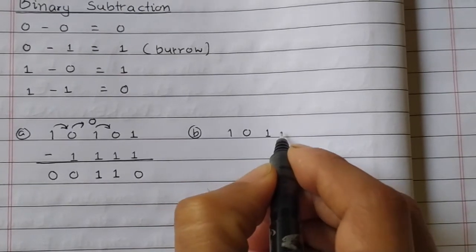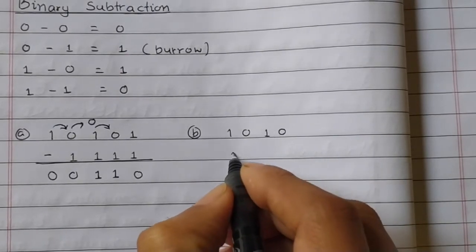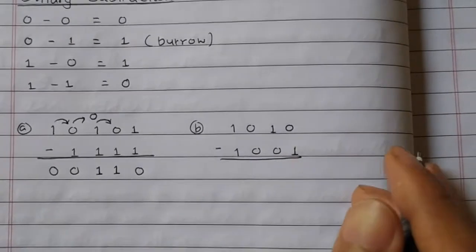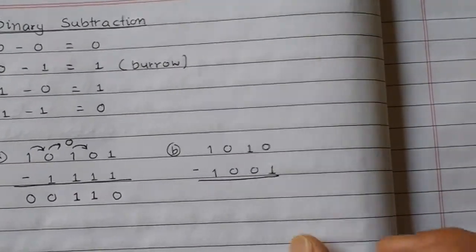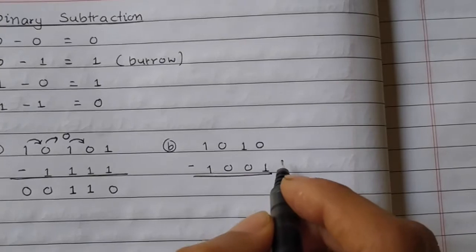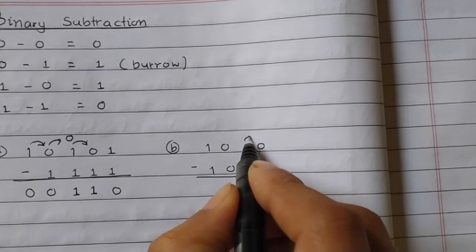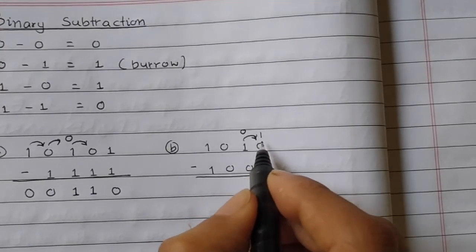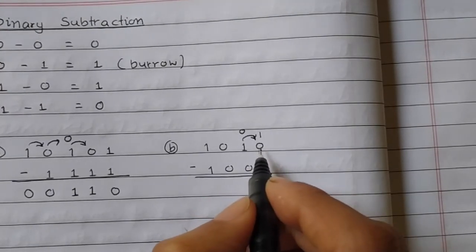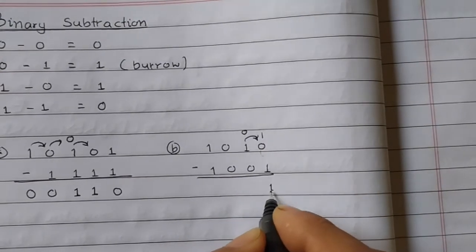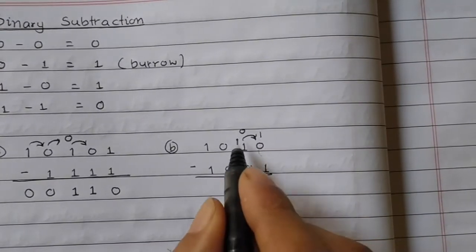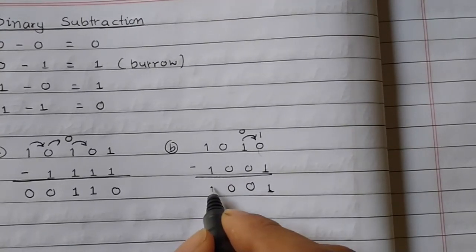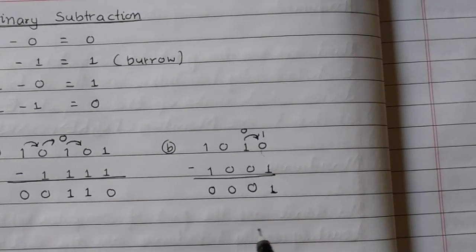Another example: 1010 minus 1001. Zero minus one requires borrowing. One minus zero is one. Zero minus zero is zero. One minus one is zero. So we can do this binary subtraction step by step.